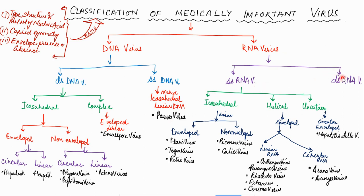RNA viruses can be double-stranded or single-stranded; the majority of medically important viruses are single-stranded. Among single-stranded RNA viruses, they may have icosahedral, helical, or uncertain symmetry. Enveloped icosahedral examples include Flavi, Toga, and Retro viruses; non-enveloped include Picorna. Helical symmetry enveloped RNA viruses with linear RNA include Orthomyxo and Paramyxo; with circular RNA include Arena and Bunyavirus. Uncertain symmetry with circular enveloped RNA includes Hepatitis Delta virus.